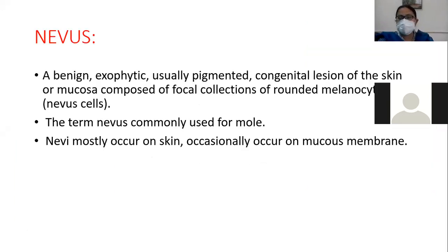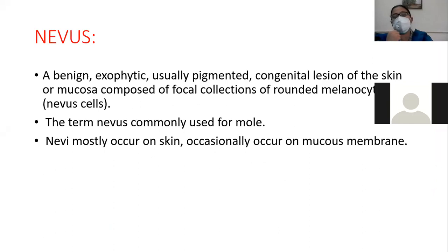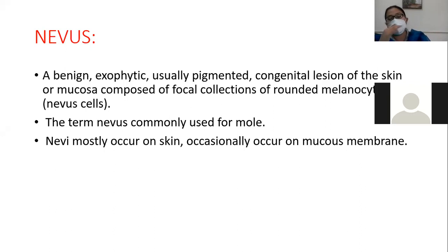Nevus is basically a benign neoplasm — a benign tumor of melanocytes. It is a benign, exophytic, usually pigmented congenital lesion of mucosa composed of a focal collection of round melanocytes, which we call nevus cells. The term nevus is commonly used for mole. Nevi mostly occur on skin; occasionally they can occur on mucous membranes. Nevus is actually a benign tumor of melanocytes.